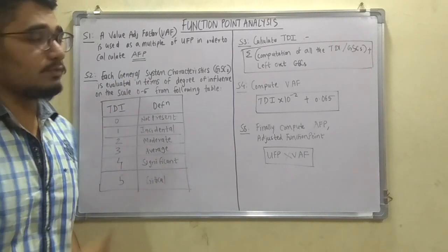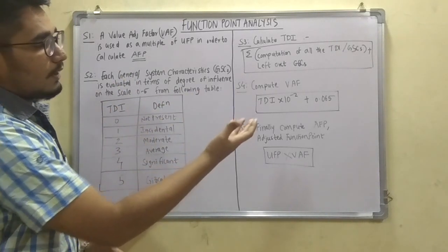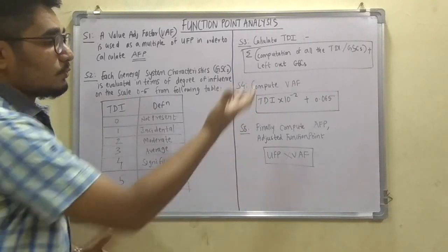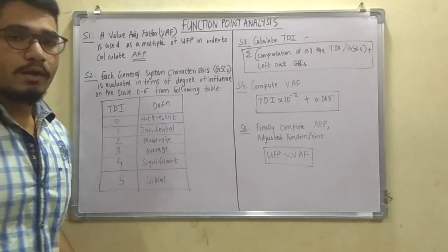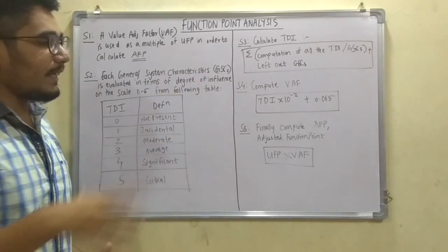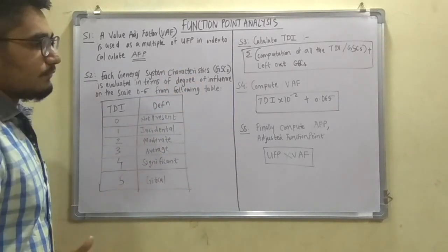If you play with these values or change, like if you do 6.5 into 10 raised to minus 2, this value you may end up getting a wrong answer. So to avoid all those things, just put the value of TDI in this and get the output and move on to the further step.